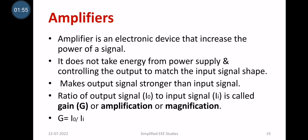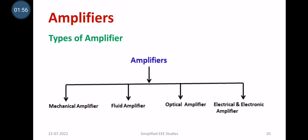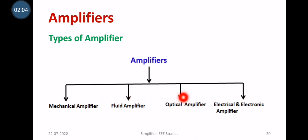Moving on to the classification of amplifiers. Amplifiers can be broadly classified into four types: mechanical amplifiers, fluid amplifiers, optical amplifiers, and finally electrical and electronic amplifiers. We will have a brief discussion of each individually.